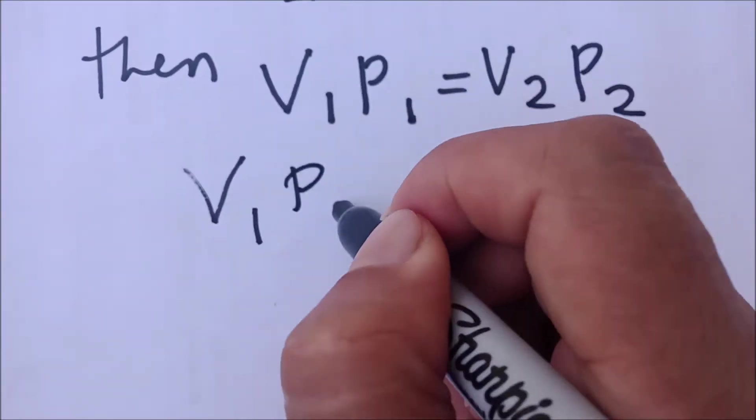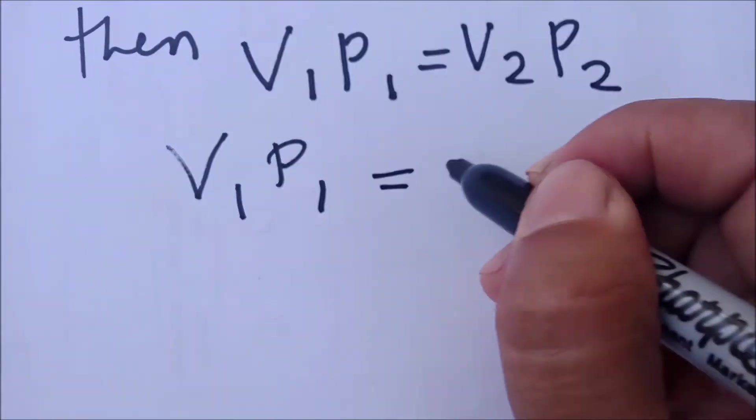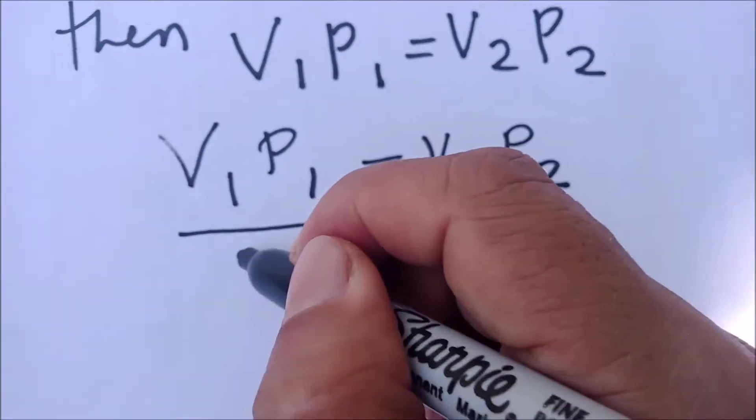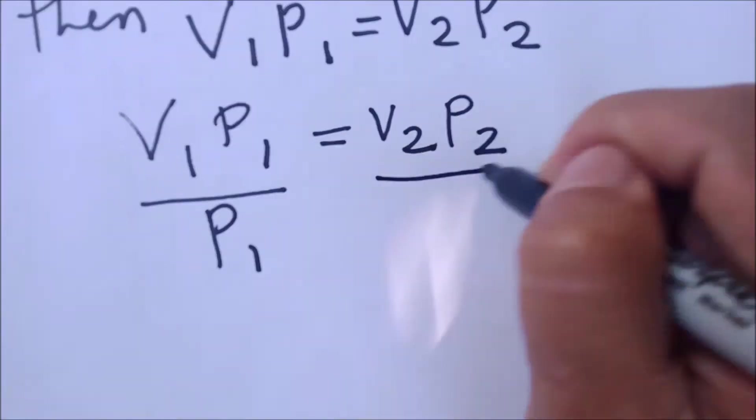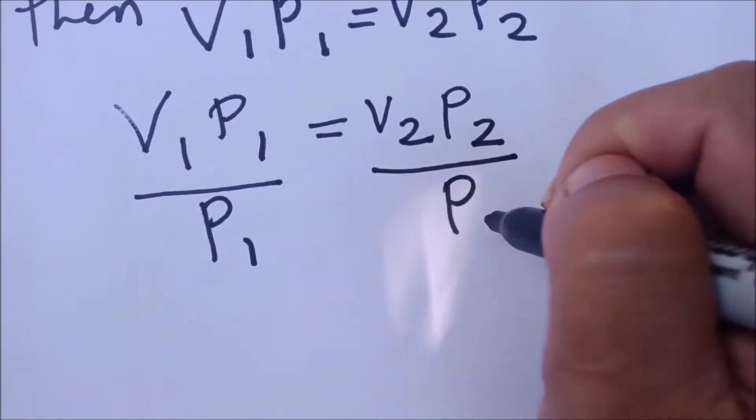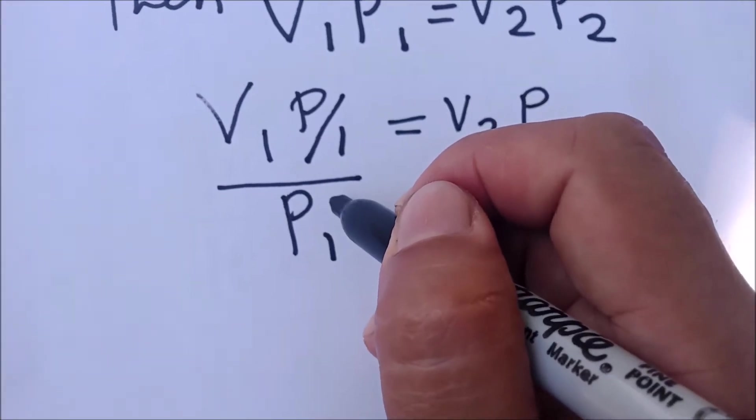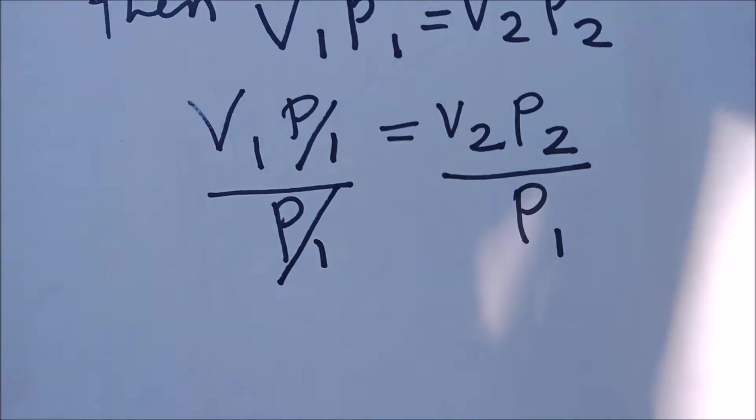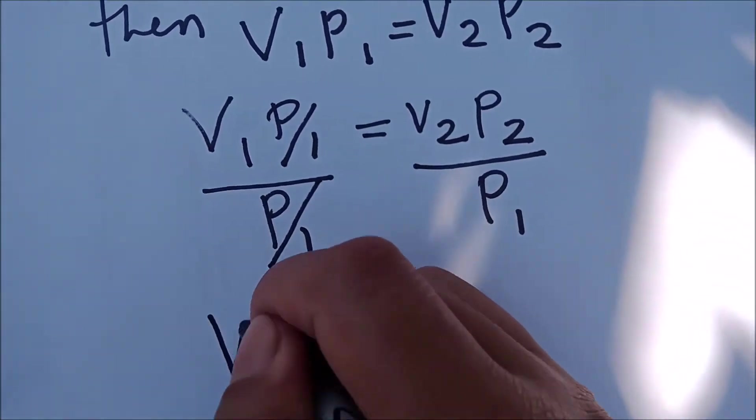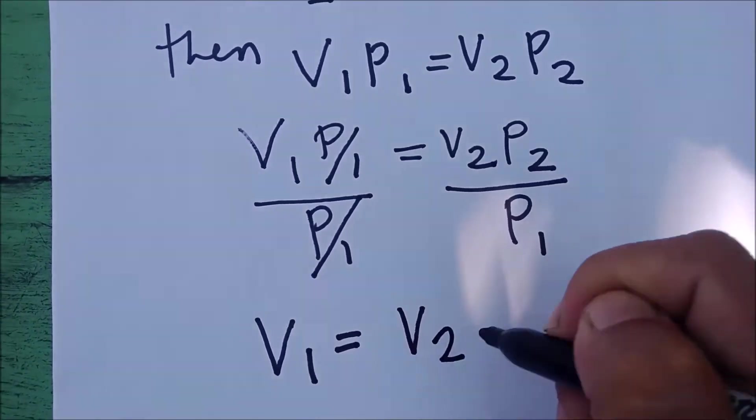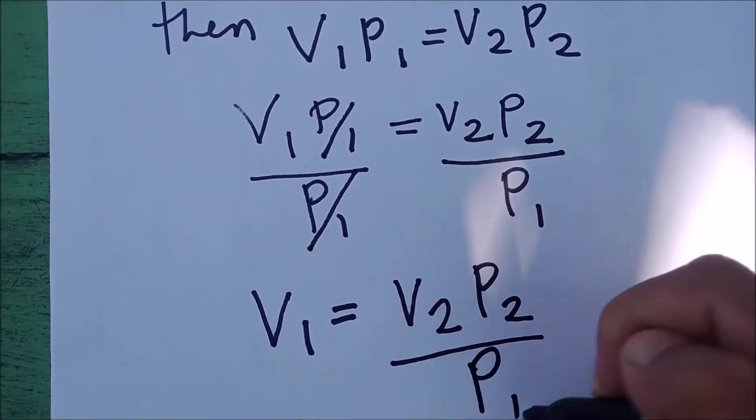V1, P1 on the left side. V2, P2 on the right side of the equation. You need to eliminate P1 here. How to eliminate it? Divide both sides by P1. This P1 here in the numerator will be cancelled out by the P1 here in the denominator.